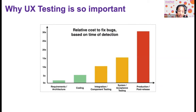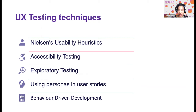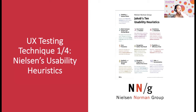Most of you know that finding issues late is very costly — this applies not just to functionality, but also to usability and accessibility findings. The techniques I usually present include usability heuristics and accessibility testing. Today in this workshop I'll focus only on the first two — usability heuristics and accessibility testing — because these are very straightforward and you can apply them today and tomorrow in your work.